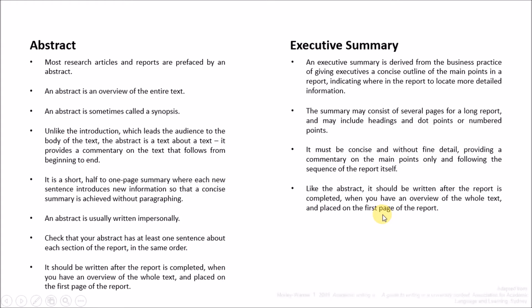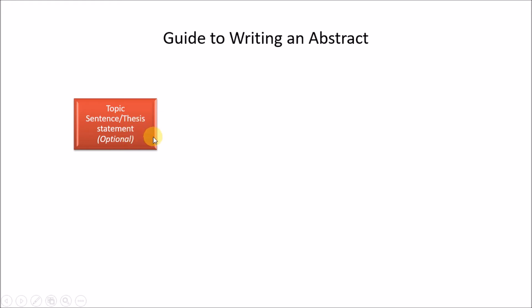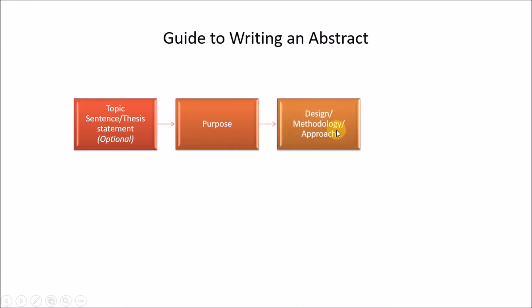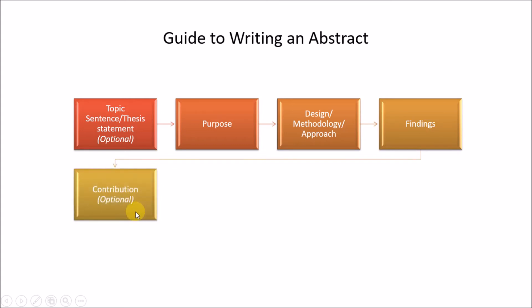Now for writing an abstract, we have eight components. The first is the topic sentence or thesis statement — this is optional, a very general sentence. The next is purpose — most abstracts start with something like 'the purpose of this study is to...' The purpose appears first if we omit the optional topic sentence. The third is design or methodology approach. The fourth is findings — after methodology, you present your findings. The fifth is contribution — remember, this is also an optional point in an abstract.